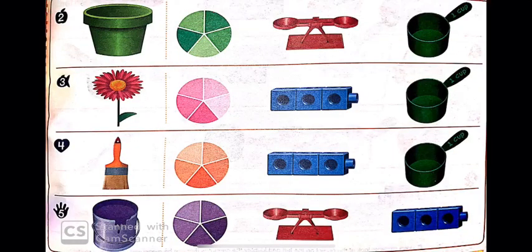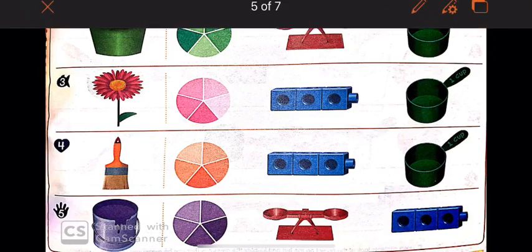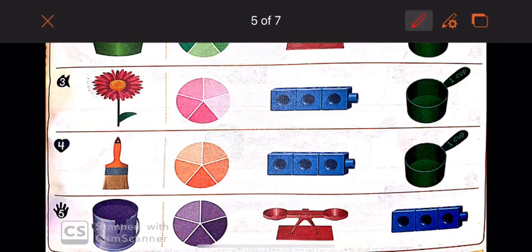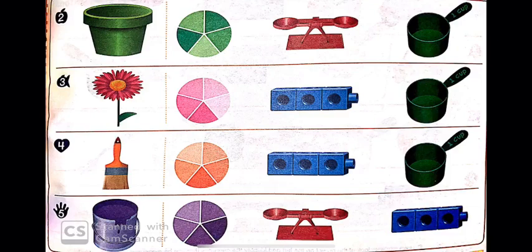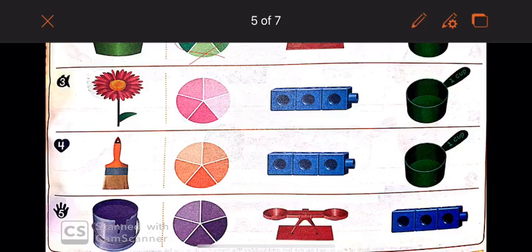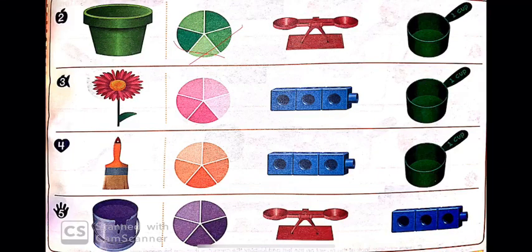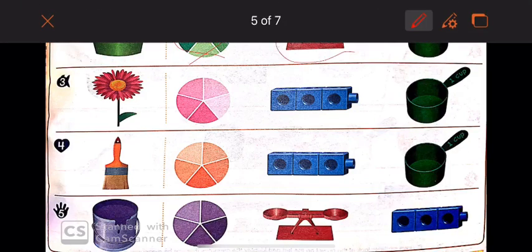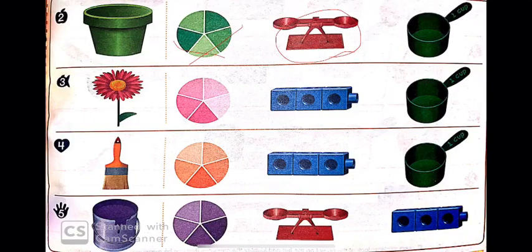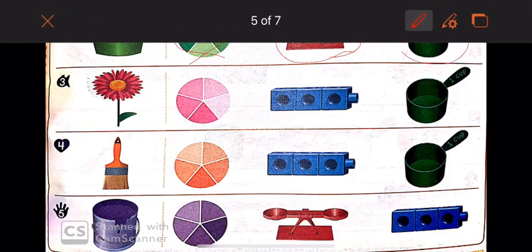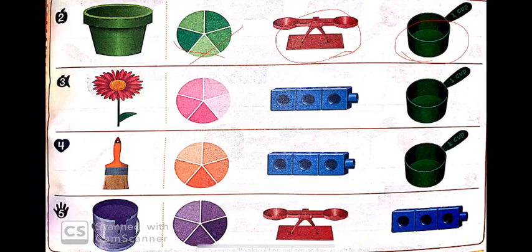Let's start with number two. I have a green pail. Can I use the wheel of colors to measure it? No, of course not — so I will cross it out. Can I use the balance to measure the weight of the pail? Yes, I can — so I will circle it. Can I use the measuring cup to measure the capacity of the pail? Yes, I can — so I will circle it as well.